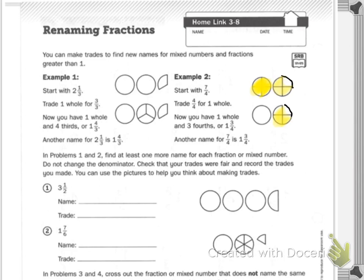In problems one and two, find at least one or more names for each of the fractions or mixed numbers. Do not change the denominator — let's highlight that. Check that your trades were fair and record the trades you made. You can use the pictures to help you think about making trades.